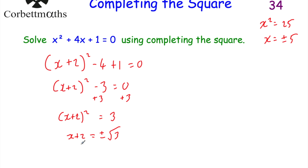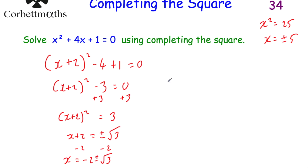It's important whenever doing completing the square questions that you include both the positive and negative square root. So we have two solutions: x = −2 + √3 or x = −2 − √3.